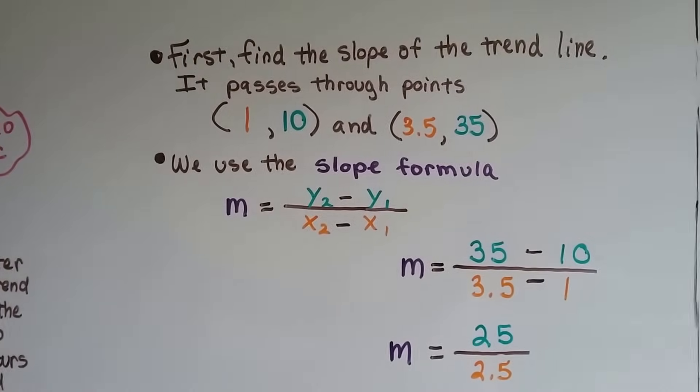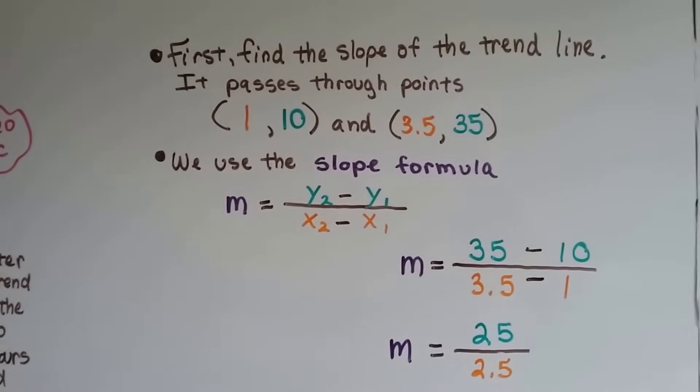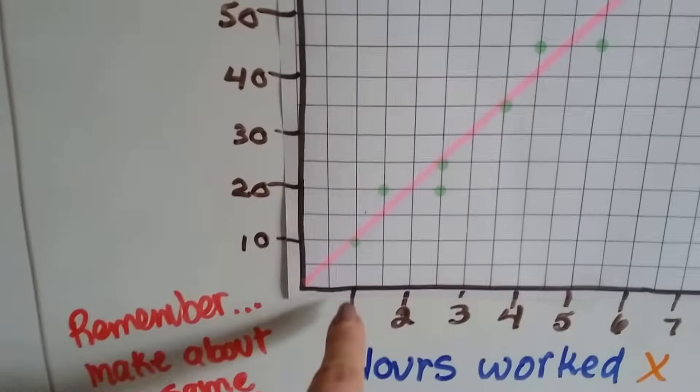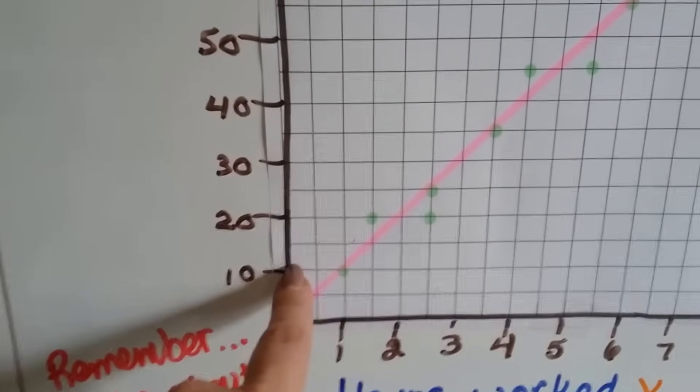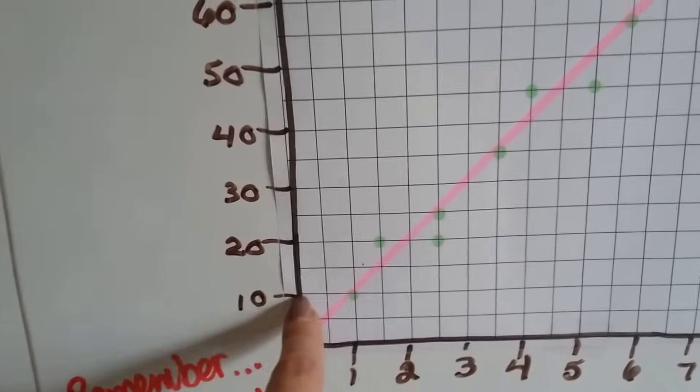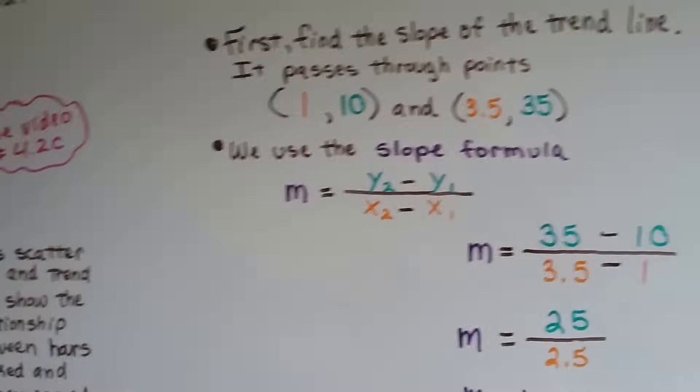So first, we find the slope of the trend line. And it passes through the points 1, 10. We can see right here it's at 1, 10, 1x, 10y.